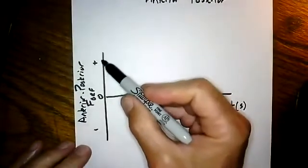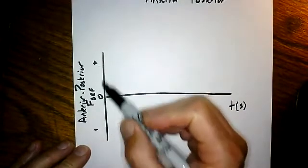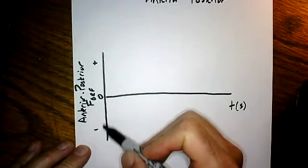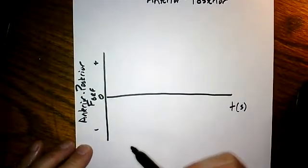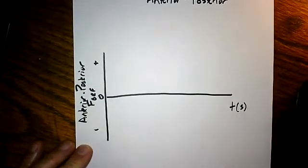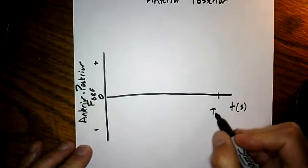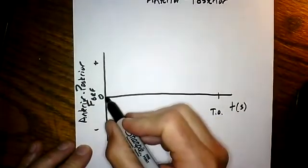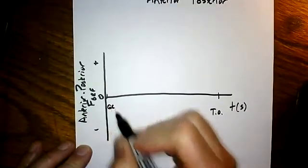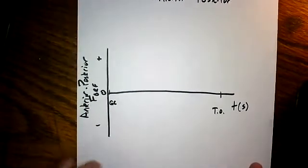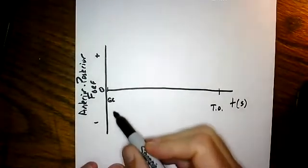On the y-axis is the anterior-posterior ground reaction force — positive, zero, negative. Remember, the force can be acting in the same direction or in the opposite direction as the runner. Down here I have time. I'll put TO for takeoff, and over here at time zero I'll put GC for ground contact. What do the data look like in an anterior-posterior direction when we run across the force platform?